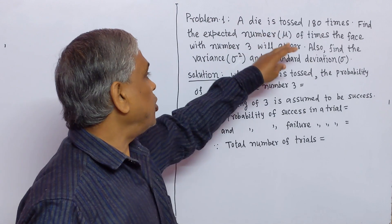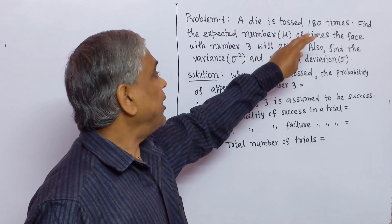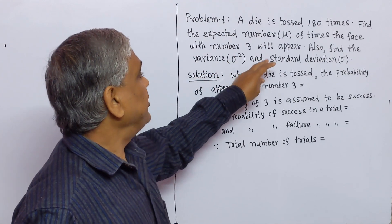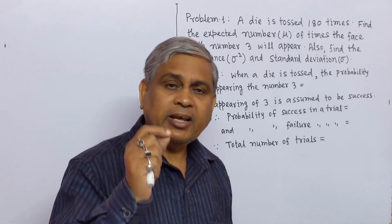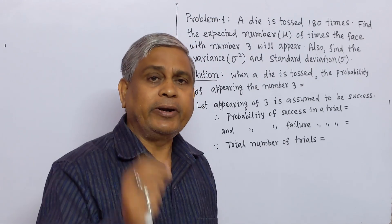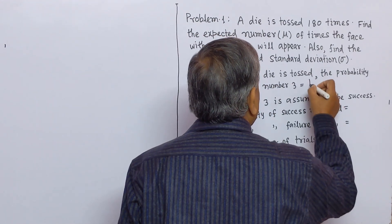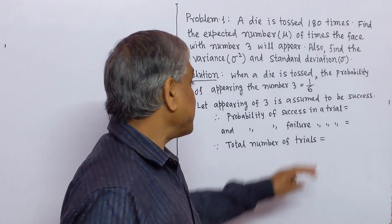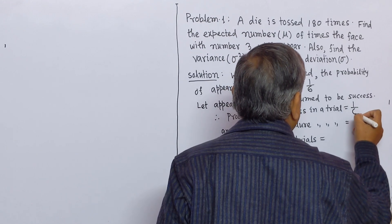Problem: a die is tossed 180 times. Find the expected number mu of times the face with number 3 will appear. Also find variance sigma square and standard deviation sigma. Since a die has 6 faces, 3 is one of these 6 faces. When a die is tossed, the probability of the face 3 appearing is 1 by 6. Let appearing of 3 be assumed to be success. Therefore, probability of success in a trial P equal to 1 by 6.